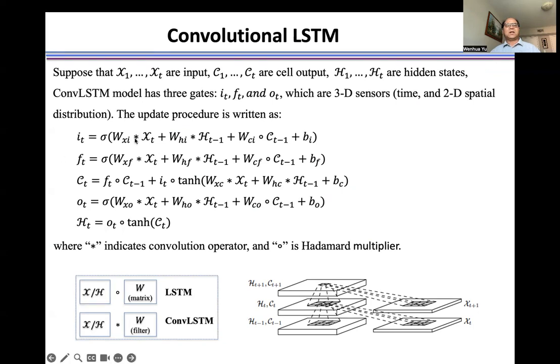We change the update formula. Here was a Hadamard product, but right now it's a convolution operation for the input and the hidden state. Because right now, input is a matrix, it's a 2D frame, a 2D image. H also is a 2D image.